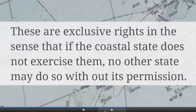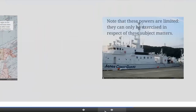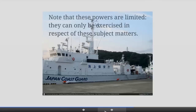These are exclusive rights in the sense that if the coastal state does not exercise them, no other state may do so without its permission. These are sovereign rights in that a state may take action to enforce its laws regarding these matters against foreign vessels within the zone — for example, by arresting vessels fishing illegally in that 200 nautical mile zone, because it has jurisdiction to control fisheries as questions of living resources. The important point is that these are limited powers, exercisable only in respect of these subject matters. The coastal state does not have the same kind of authority as in its territorial sea; it can only regulate issues of resources, energy and economic usage.